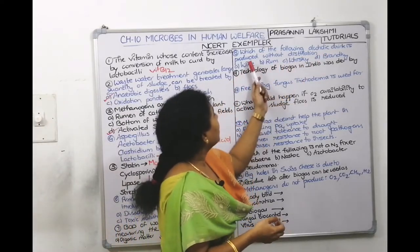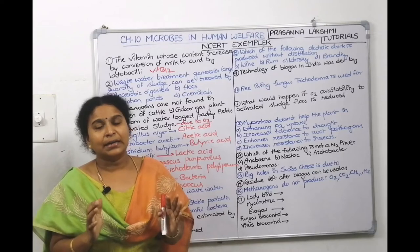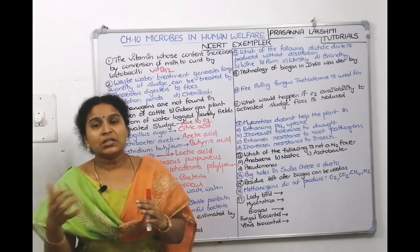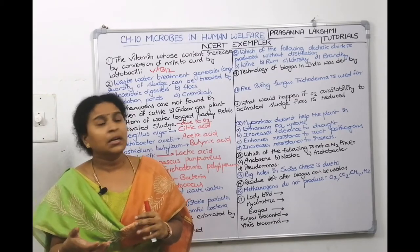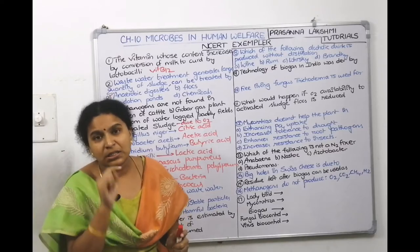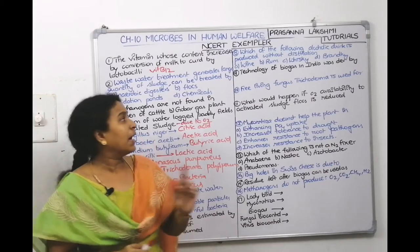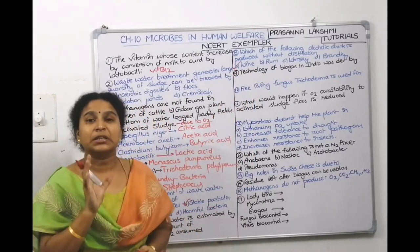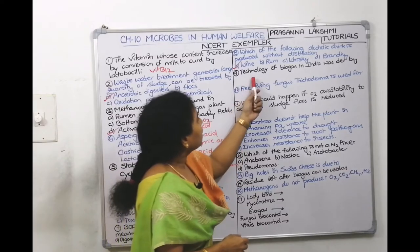Eighth question: which alcoholic drink is produced without distillation? Distilled beverages have 40–80% alcohol content. Beer and wine are non-distilled beverages with only 4–8% alcohol content. Wine is in the options, so wine is the answer. Rum, whiskey, and brandy have more than 40–50% alcohol content. Alcohol consumption is not good for health.